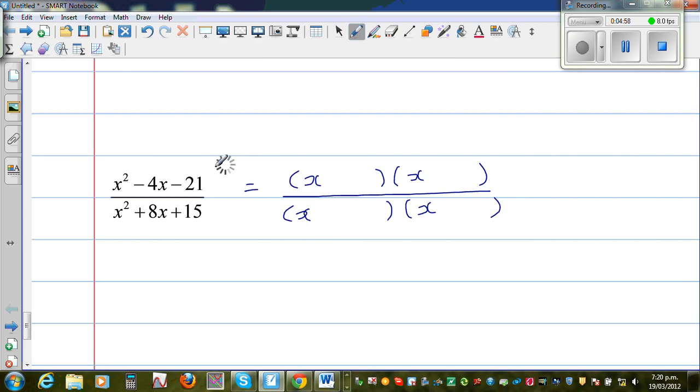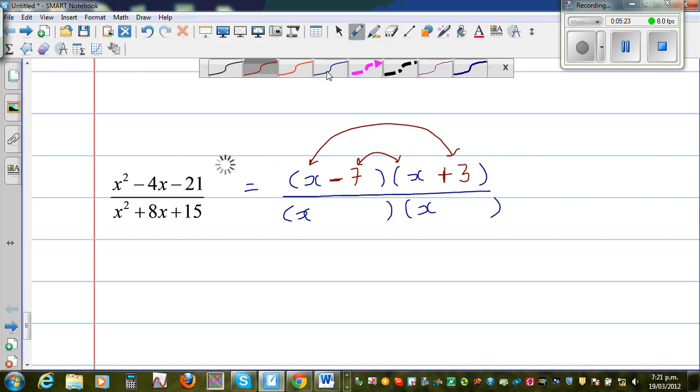So let us think of the numerator. Hopefully you have done it. So here the two factors of negative 21 which gives you negative 4, so the greater has to be negative, the smaller has to be positive because we want a negative number. So this is negative 7 plus 3. So you can check. This is minus 7x and this is plus 3x. So just so that you can see, I'll write this. This is negative 7x and this is plus 3x. And these two does give you minus 4x.